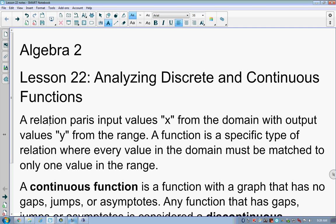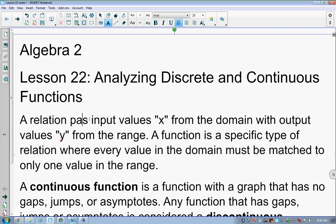A relation pairs input values X from the domain with output values Y from the range. We've talked about X and Y values, input-output, domain and range. A function is a specific type of relation where every value in the domain or every X value is matched to only one value in the range or only one Y value.